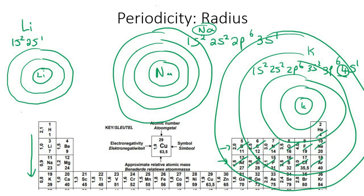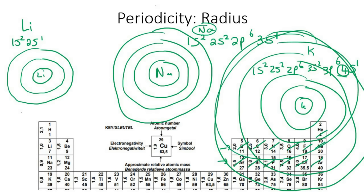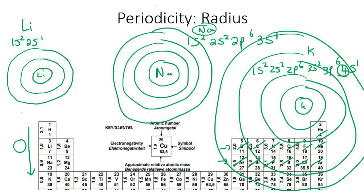So as you go down a group, the size actually becomes larger. Yes, potassium has more protons, and that has some effect, but it doesn't compare to the effect of increasing the number of energy levels. The size becomes larger.